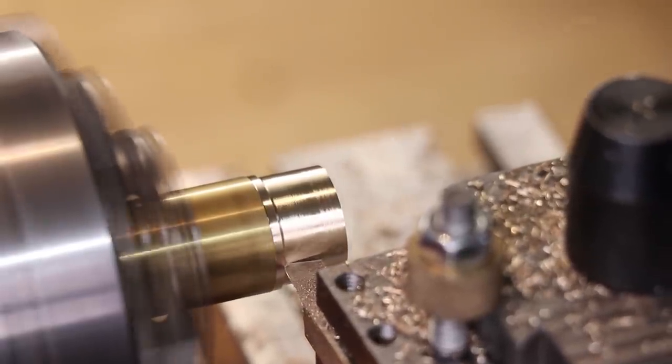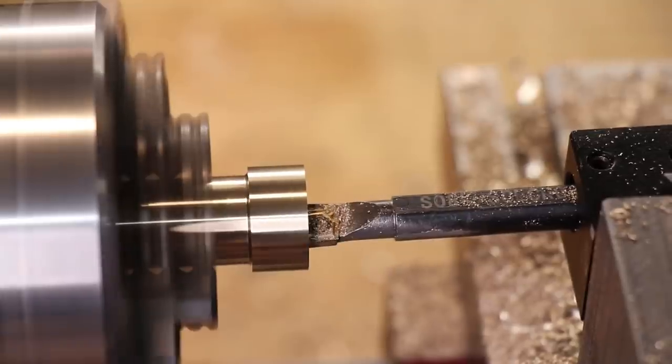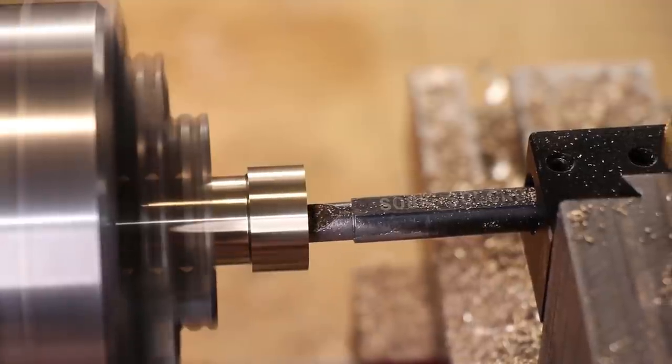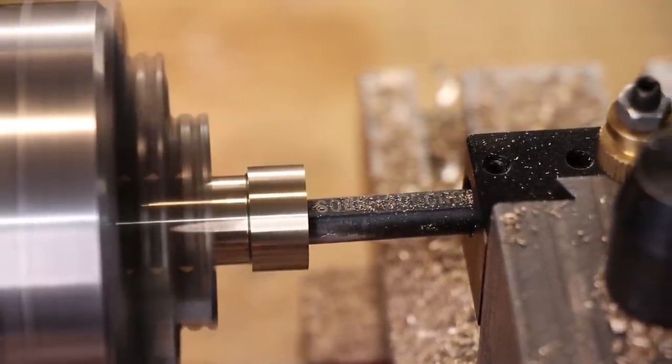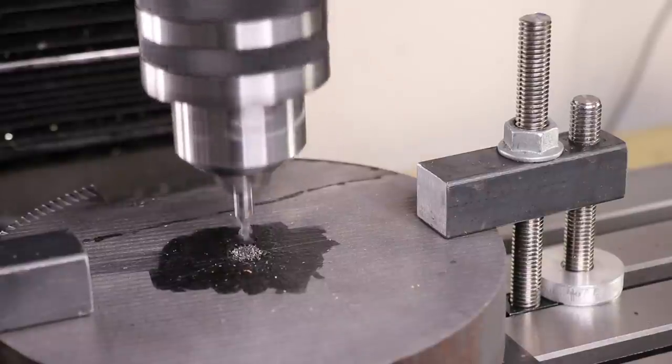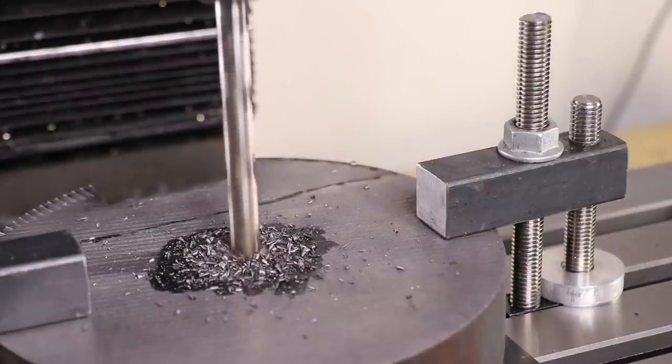And whilst I was making one, I might as well make up the other two. The final thing left to do is machine a 5/8 inch hole in the centre of the cast iron.